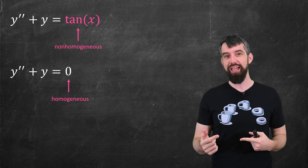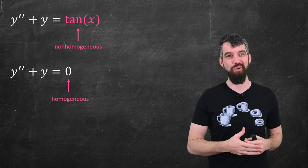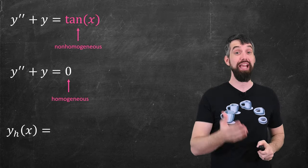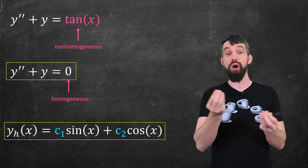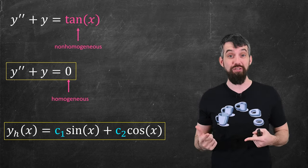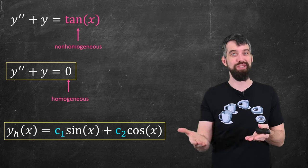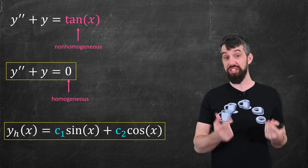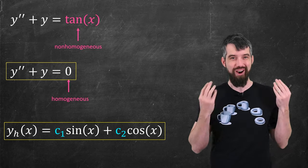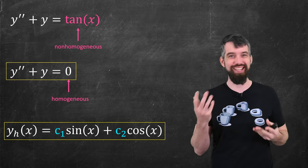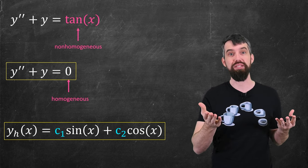The reason why this matters is that we have an entire theory of how to solve equations like the homogeneous case, and indeed its solution — I call it y_h for homogeneous — is just a linear combination of sine and cosine. You can verify by plugging it in: two derivatives of sine is just negative sine, and negative sine plus sine equals zero. Likewise for cosine. More than just stating the solution, we have an entire methodology to solve all constant-coefficient homogeneous differential equations, like this one, studied previously in the playlist.